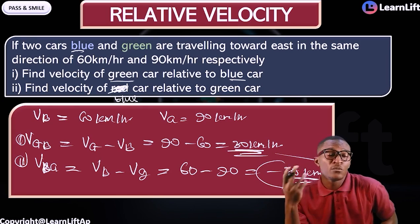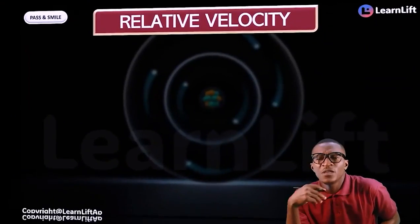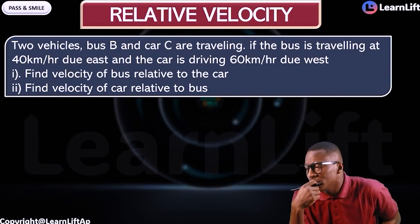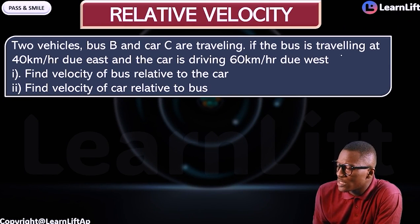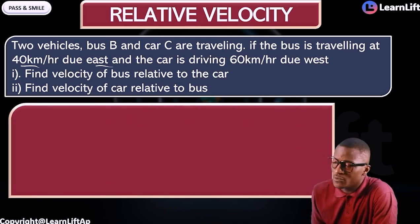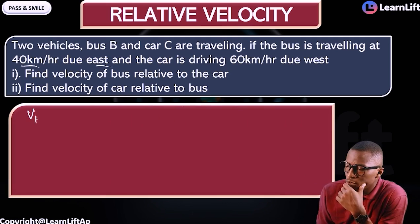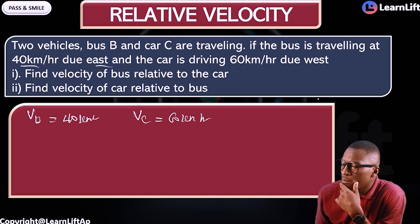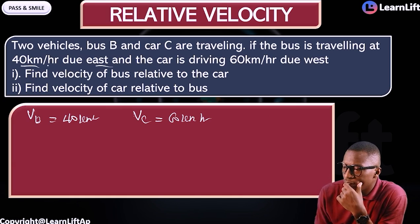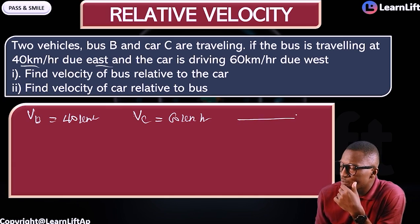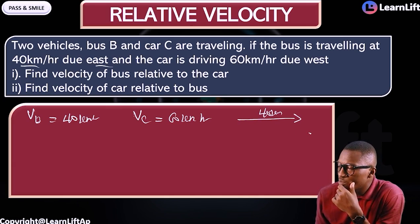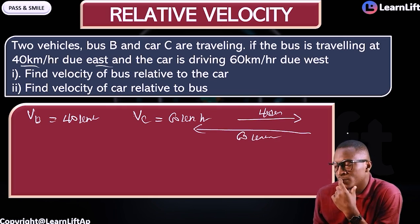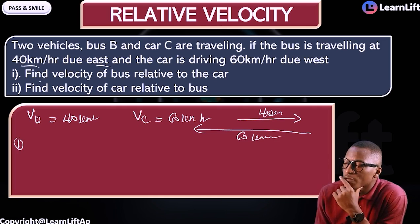Just know what your blue is and what your green is — what is relative to what — and you get your answer. Now for opposite direction: two buses B and C are traveling, with one bus at 40 km/h east and the other at 60 km/h west — that means opposite direction. We can draw this: one is moving towards the east at 40 km/h and the other is moving towards the west at 60 km/h.